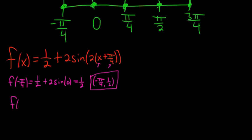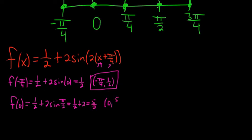Let's do f(0). Plugging in 0, we get 1/2 plus 2 sine of (2·0 + π/4)·2. So 0 plus π/4 is π/4, times 2 is π/2. We get sine of π/2. Sine of π/2 is 1, so this is 1/2 plus 2. That's 4/2 plus 1/2, which is 5/2. The ordered pair here is (0, 5/2).